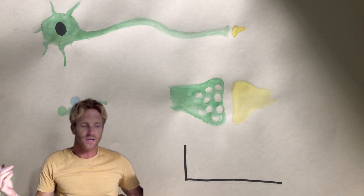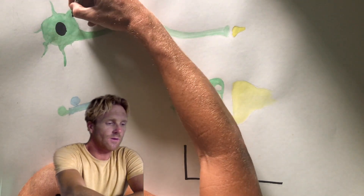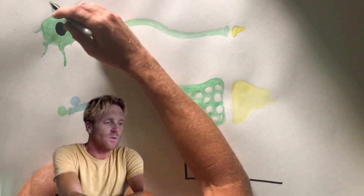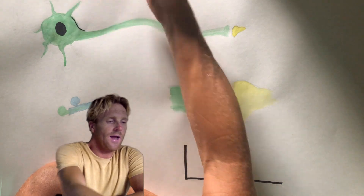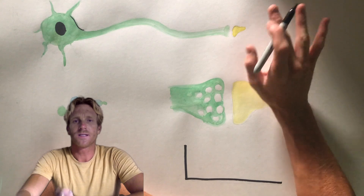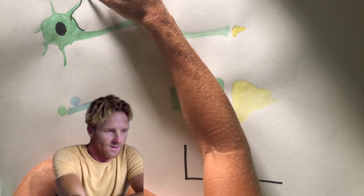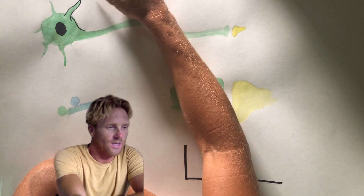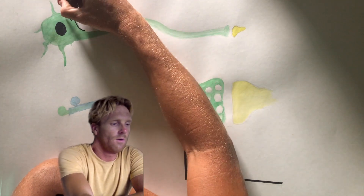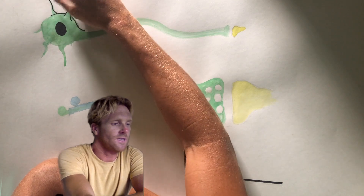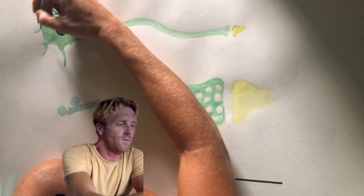A neuron comes in a couple of different shapes but the most common shape kind of looks like this. You're going to have a cell body located right here and inside the cell body that's where you'll have the nucleus. This cell body is kind of circular in shape and projecting out from the cell body are going to be a series of projections that are kind of spindly looking, branch out, and almost look like a dead tree, extending out in a couple of different directions away from the cell body itself.